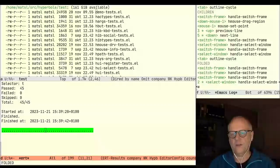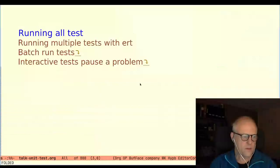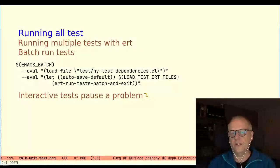But we were still running it manually by calling ert. How could we run it from the command line? So ert comes with functions for running it in batch mode. For hyperbole we use make for repetitive tasks. So we have a make target that uses the ert batch functionality. And this is the line from the make file. So this is a bit detailed but you see that we have a part here where we load the test dependencies for getting the packages such as el-mock and simulated input, etc., loaded.